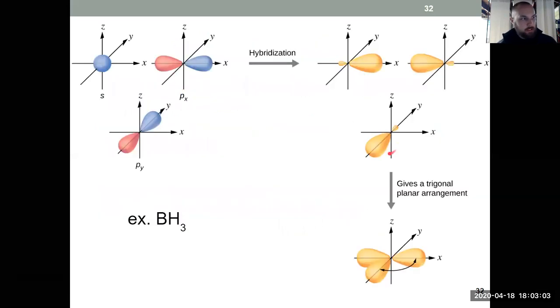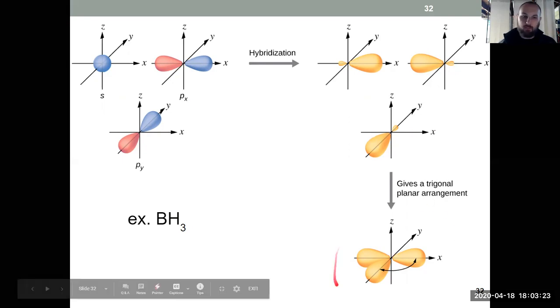We see that with BH3. Draw the Lewis structure for BH3. Boron is surrounded by three bonds. So it is sp2 hybridized. 1s, two p's coming together, new orbitals. To follow valence shell electron pair repulsion and be as far apart as possible, they're 120 degrees apart.